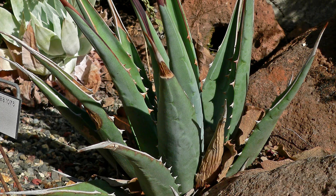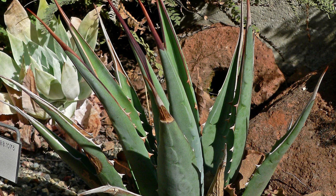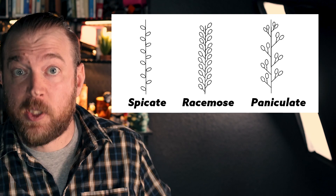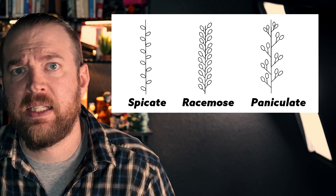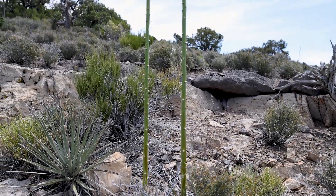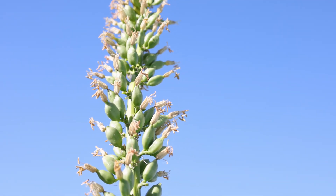Most experts believe that cababensis is the oldest taxa of Agave utaensis, and they believe that because of its flower structure. Agave utaensis, like most forms of agave, is monocarpic — meaning it flowers once in its life and then dies. The flower structure for most kinds of utaensis is variable, meaning it can be one of basically three different kinds. As it's flowering, it produces a tall 10, 12, or 15-foot flower stalk, and that's where the flowers grow from.